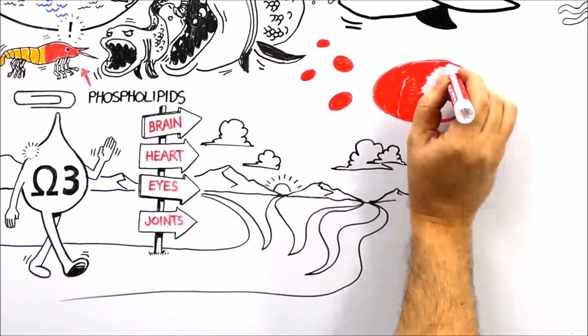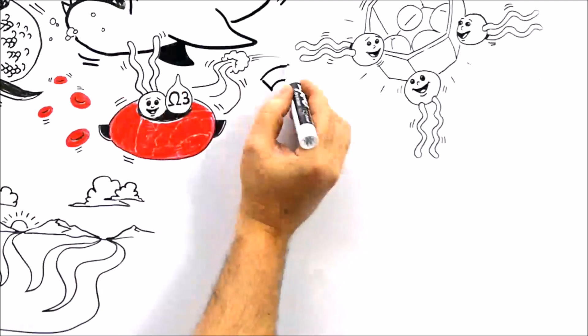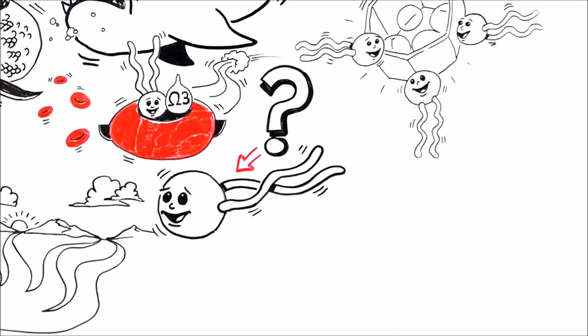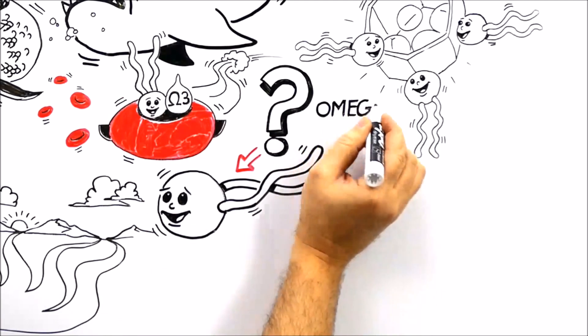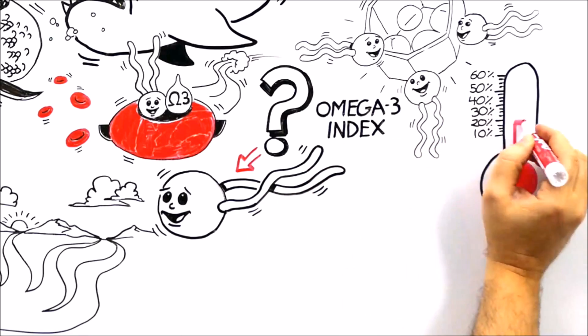So how can you make sure the omega-3s you take are getting into your tissues? It comes down to the phospholipids. By using something called the omega-3 index, you can measure the percentage of EPA and DHA in the red blood cell fatty acids.